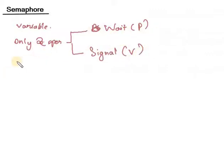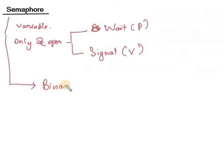There are two types of semaphores: binary semaphore and counting semaphore.